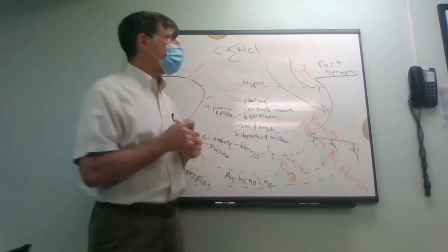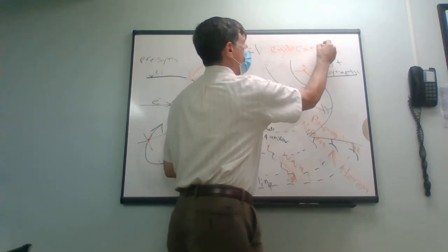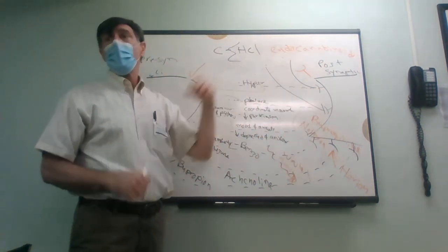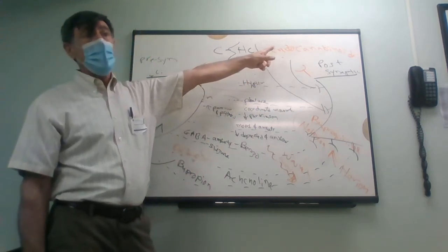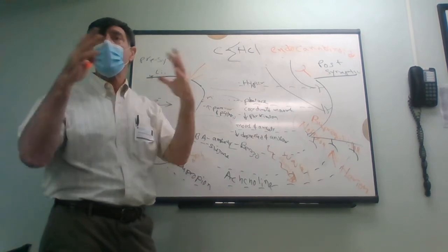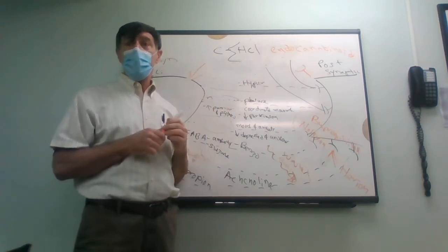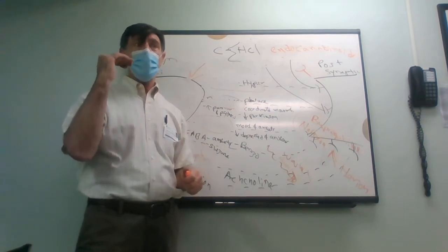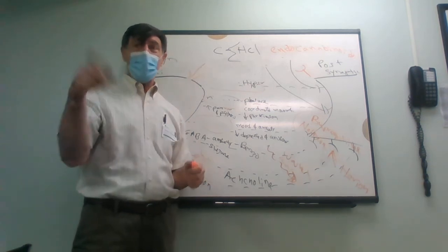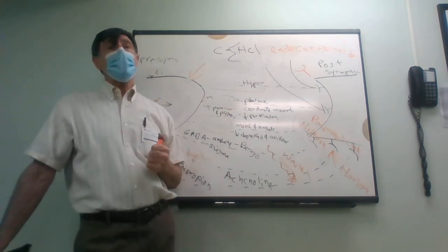Lo and behold, there are endocannabinoids — cannabinoids from within. What do they do? There's evidence they have anti-inflammatory properties, anti-seizure properties, and may prevent cell death — they're neuroprotective. But we're still in the infancy of this. Marijuana has been very hard to study because the DEA classified it as a Schedule I drug, meaning it has zero medicinal value and is highly addictive.